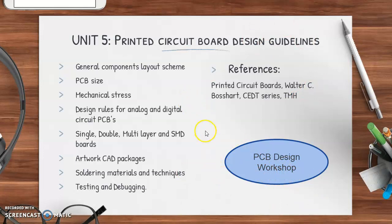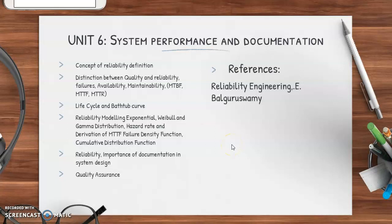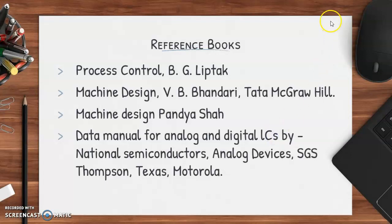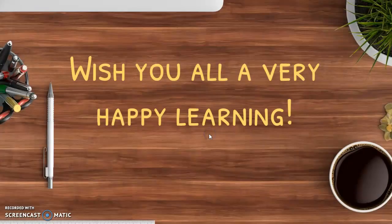Unit 6 covers system performance and documentation — discussing the quality and reliability of a system, and the importance of documentation in system design. Quality assurance is also discussed here. The reference book is 'Reliability Engineering' by Valpura Swami. Other references include 'Process Control' by Liptak, 'Machine Design' by Bhandari, 'Machine Design' by Shah, and data manuals for all analog and digital ICs.